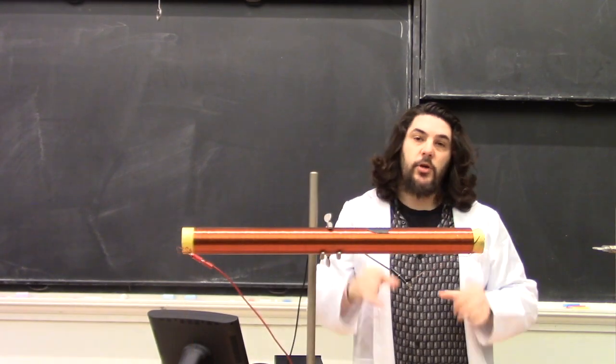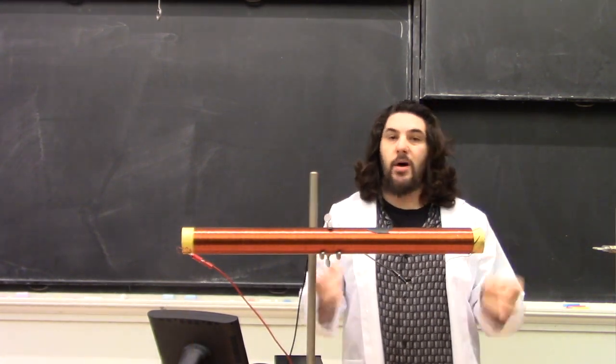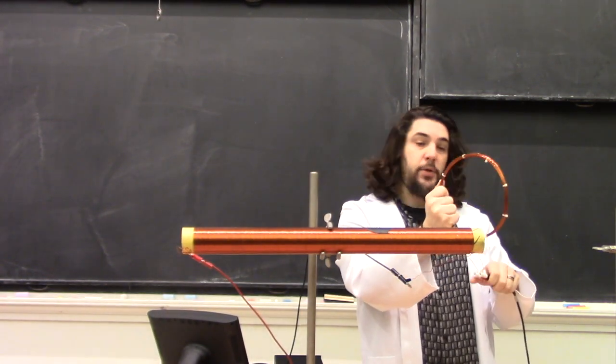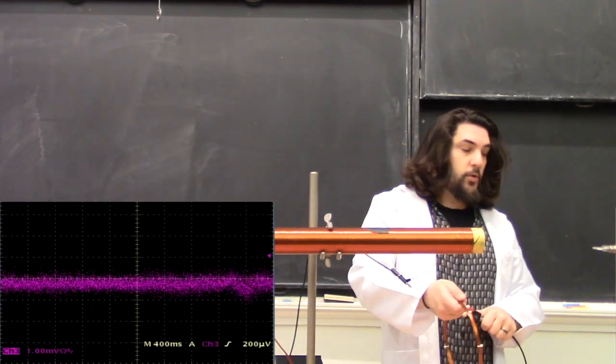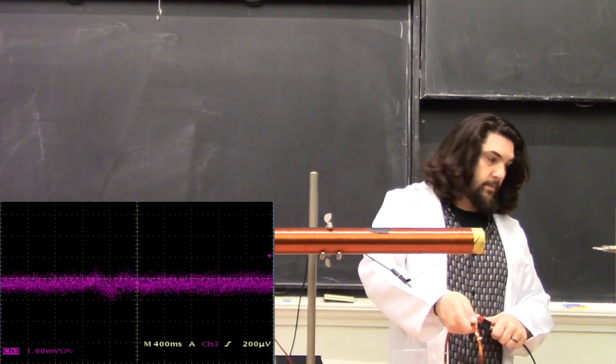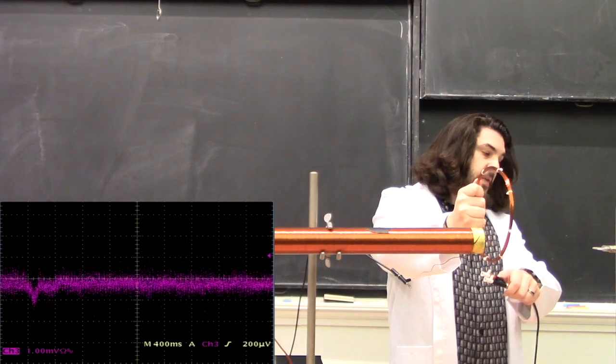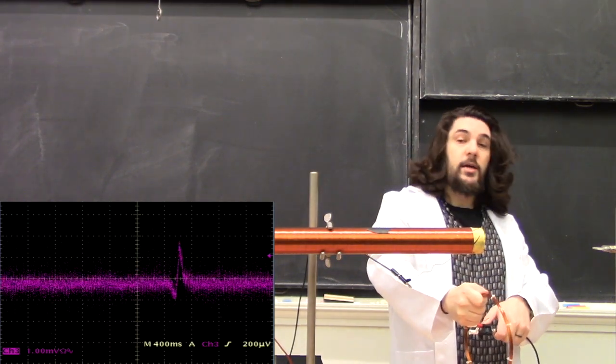In many ways, a solenoid can be looked at similarly to a bar magnet. So it should behave pretty similarly whenever we have it interact with a loop of wire. So if we bring a loop of wire into the magnetic field, we see a spike, and if we take it out, we see a spike in the other direction.